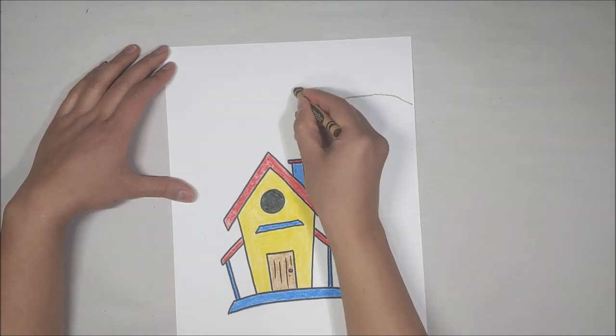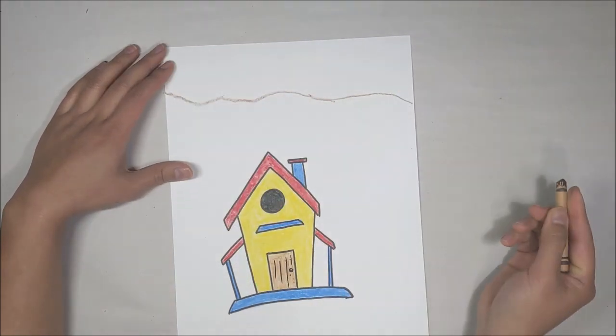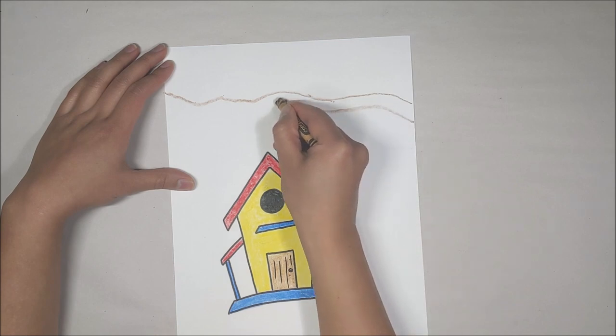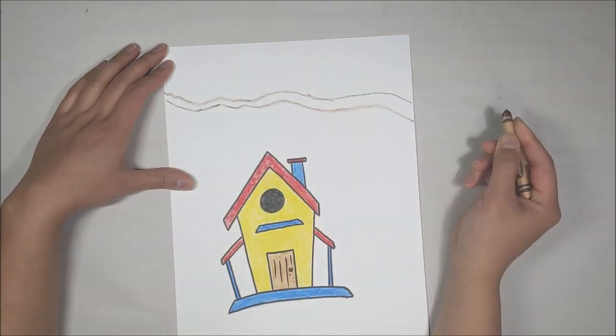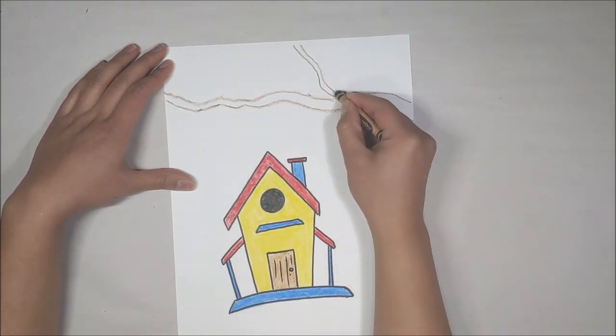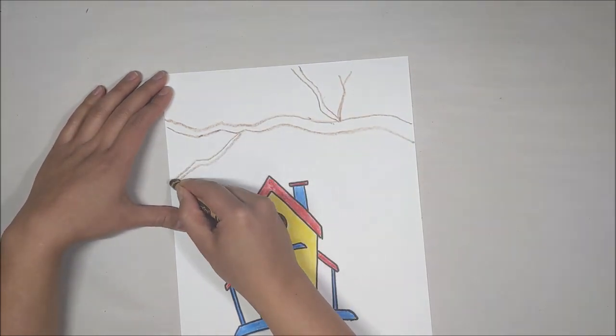Next, taking the brown color, create a branch above the bird house. Create two rugged lines to create a thick branch. Then create some smaller branches branching off of that larger branch.